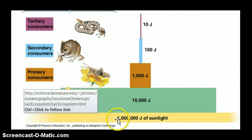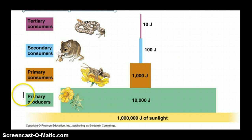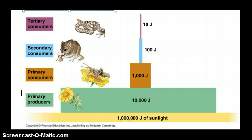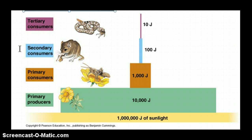If there's about a million joules of sunlight hitting the primary producers, then only about 10,000 joules are actually picked up by those plants. Only 1,000 joules are available to the primary consumers. The secondary consumers maybe get 100. A snake as a tertiary consumer maybe only gets 10. So energy passes through this food chain, but most of it is lost as it goes from one level to another.